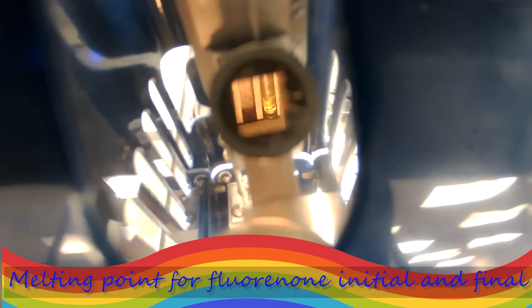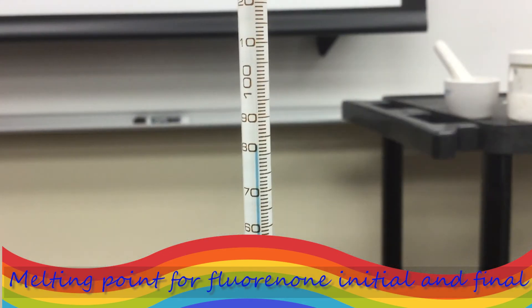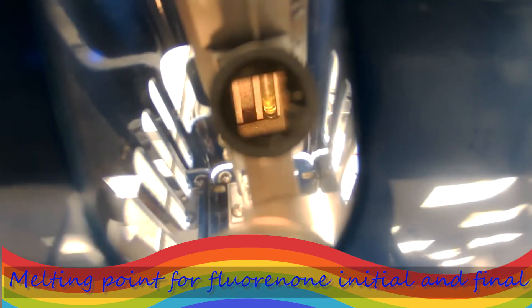Okay, initial melting took place. And as soon as it turns clear, all solid changes to liquid, we are going to record the final. See, what is happening now. Very nice. Okay, everything is liquefied and we have the temperature of 82. So it started at 80 and it finished at 82. And at this point, we turn off the meltdown apparatus. Let it cool down before we use the next sample.